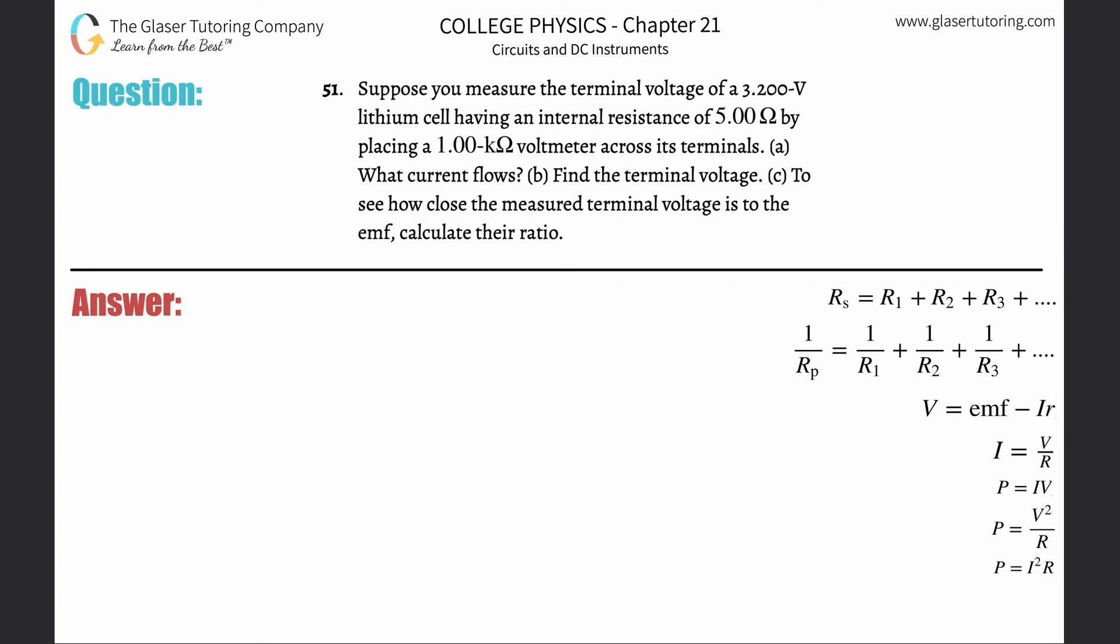Number 51. Suppose you measure the terminal voltage of a 3.2 volt lithium cell having an internal resistance of 5 ohms by placing a 1 kilo ohm voltmeter across its terminals. Letter A, what current flows?